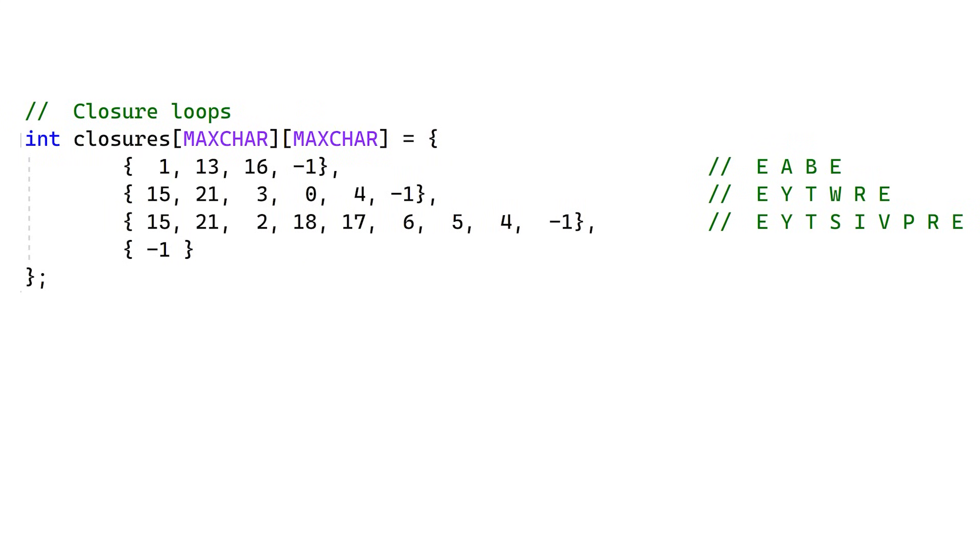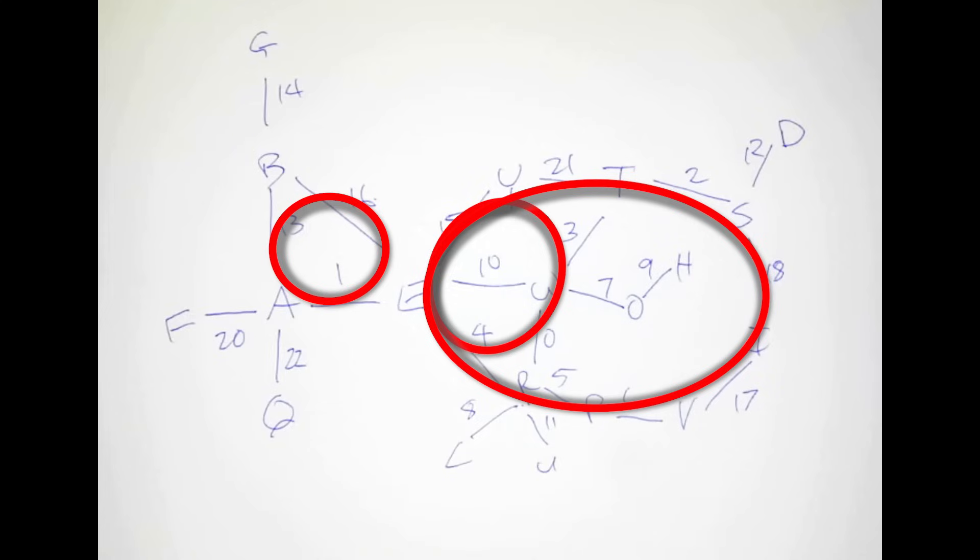The next thing I need is another two-dimensional character array which stores the characters in my closure loop. Again, this is obtained directly from the menu.